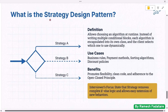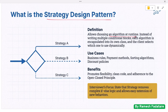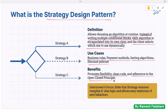Next: what is the strategy design pattern? Strategy allows choosing an algorithm at runtime. Instead of writing multiple conditional blocks, each algorithm is encapsulated into its own class and the client selects which one to use dynamically. This pattern is useful for business rules, payment methods, sorting algorithms, discount policies, and more. It promotes flexibility, clean code, and adherence to the open-closed principle. Interviewers want to hear that strategy removes complex if-else logic and allows easy extension of new behaviors.